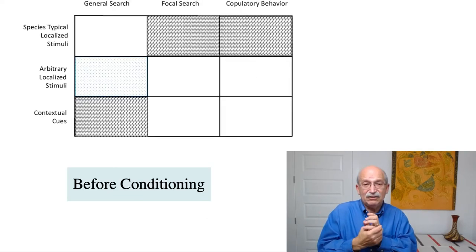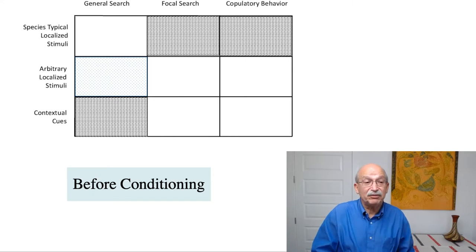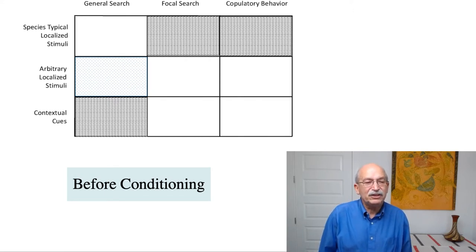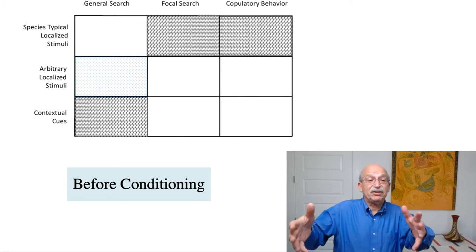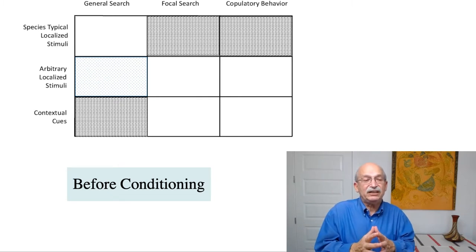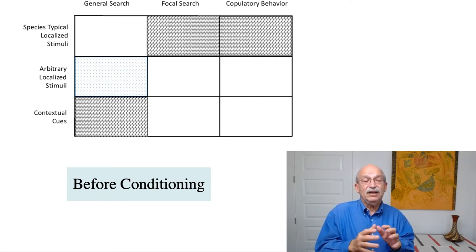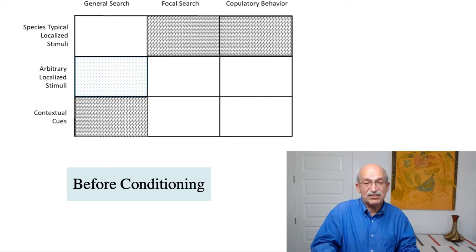The next slide shows you how you might organize these. Each row represents a different type of conditioned stimulus: species-typical cues such as the female's head and plumage, localized arbitrary stimuli like a light, or contextual cues. And we're interested in general search behavior, focal search behavior, and copulatory behavior. Before conditioning, only the shaded parts of this grid show much control — you get focal search behavior to species-typical cues to some extent, and copulatory behavior if the female is totally accessible. Contextual cues generate general search behavior, and a lot of the other cells in this table are empty.